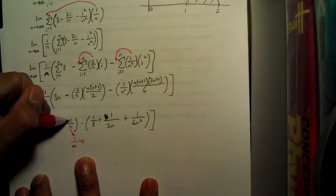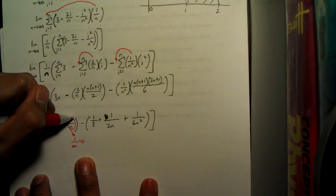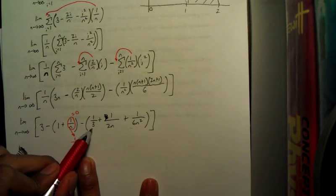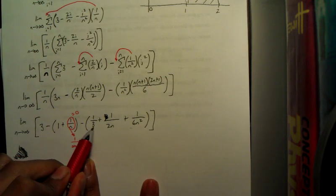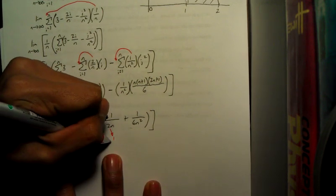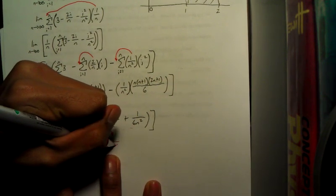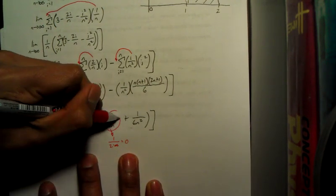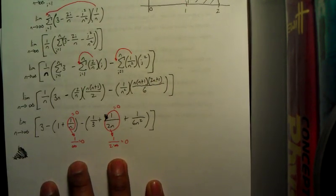So this part right here is just going to equal 0. Right there, we don't have any n's on this one. That goes to 1 over 2 times infinity, which equals 0. So this section right here is going to equal 0.